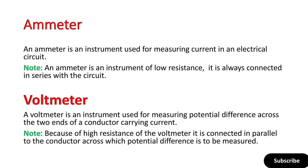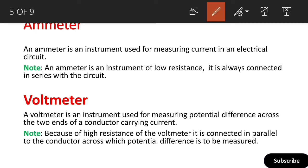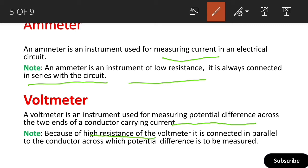An important point: the ammeter is a low resistance instrument, which is why it is always connected in series. Next is the voltmeter. A galvanometer can be converted into a voltmeter, which we use to measure the potential difference across the two ends of a conductor carrying current. Ammeter is used to measure current; voltmeter is used to measure potential difference. Because the voltmeter has high resistance, it is connected in parallel with the conductor across which potential difference is to be measured. Ammeter connects in series; voltmeter connects in parallel.